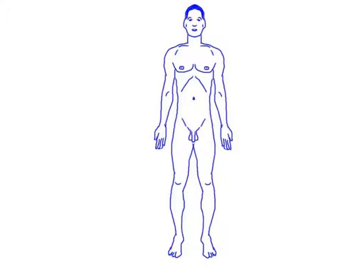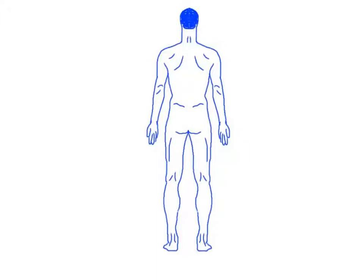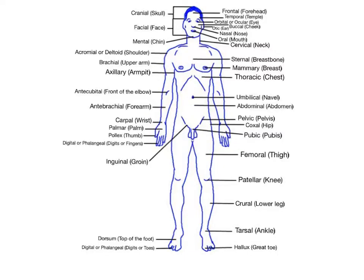Now let's practice using these directional terms to describe the location of body regions relative to each other. I'll give you the correct answer after each question. Number one: the abdominal region is blank to the cervical region. The answer is inferior. Number two: the occipital region of the skull is blank to the buccal region of the cheeks. The answer is posterior. Number three: the mammary region is blank to the inguinal region. The answer is superior.